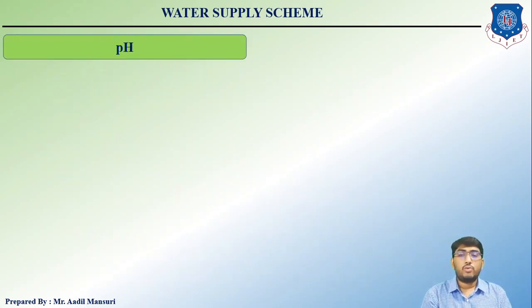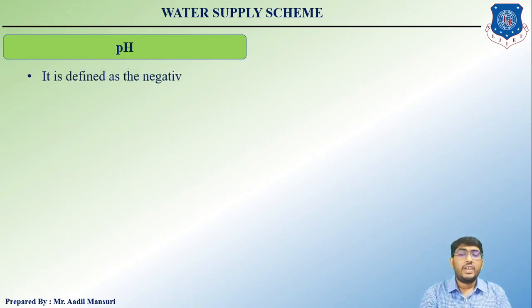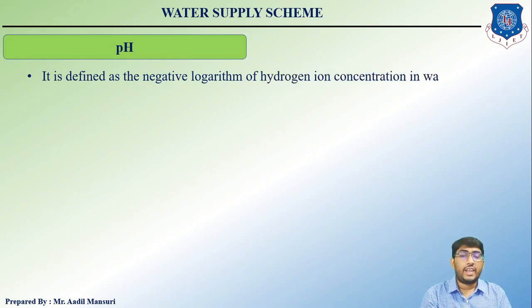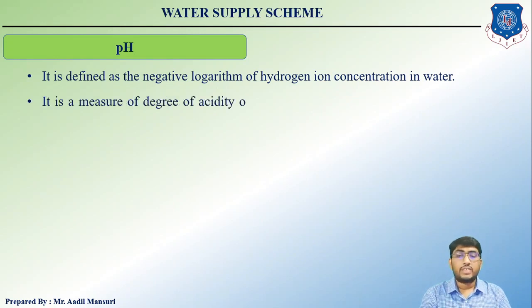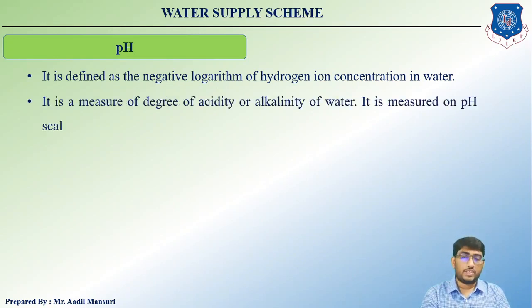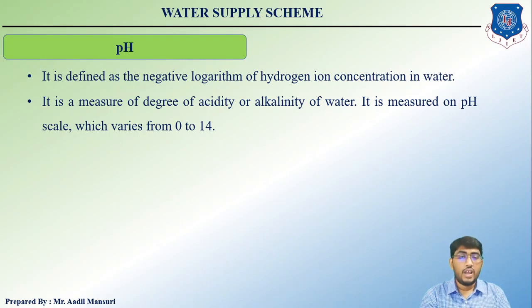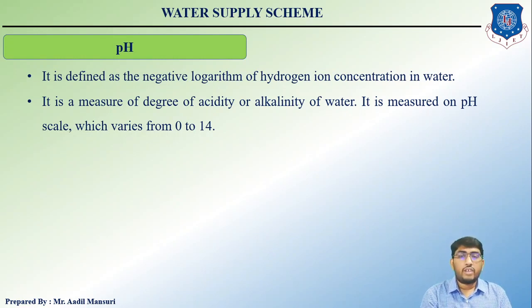Let us talk about pH. It is defined as the negative logarithm of hydrogen ion concentration in water, and it is a measure of the degree of acidity or alkalinity of water. It is measured on the pH scale, which varies from 0 to 14.